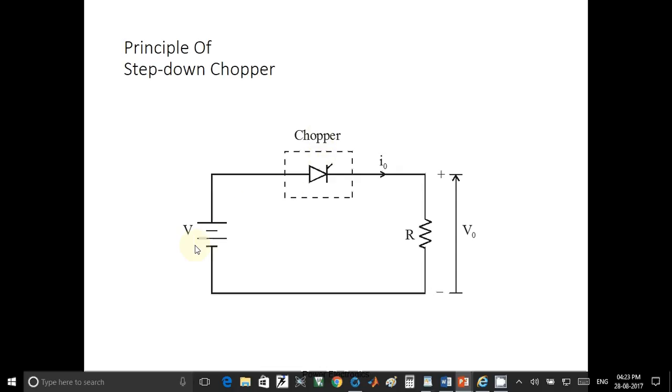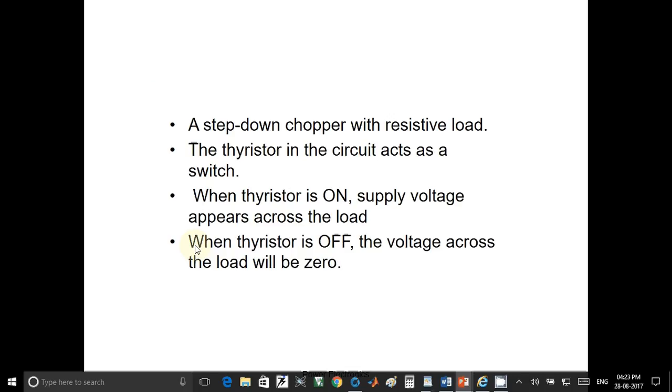In step down chopper, when we apply gate pulse, thyristor will turn on. When thyristor is turned on, supply voltage appears across the load. When thyristor is off, supply voltage will not appear across the load. Output voltage is zero.